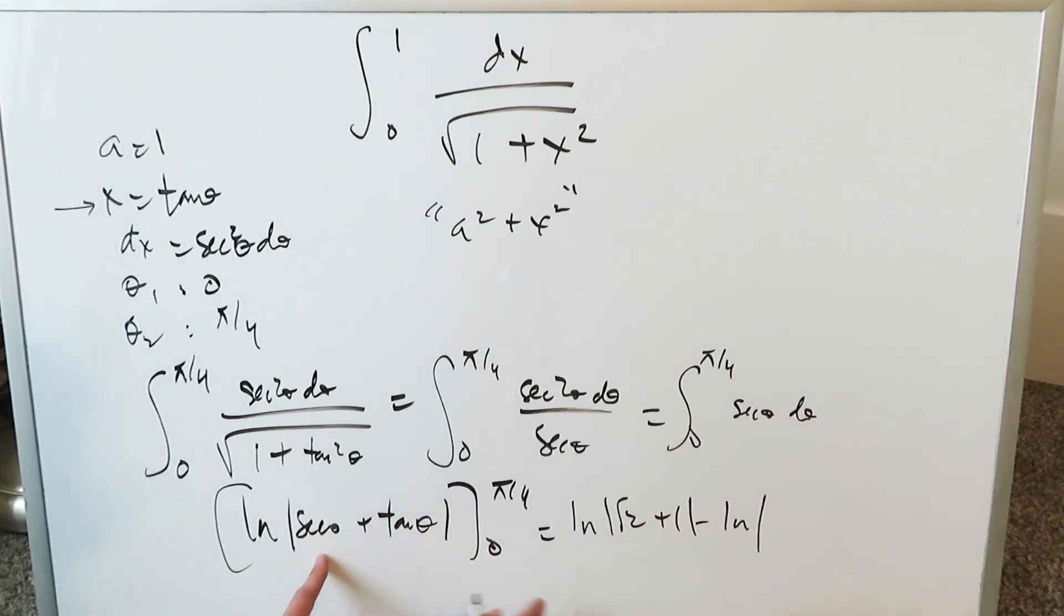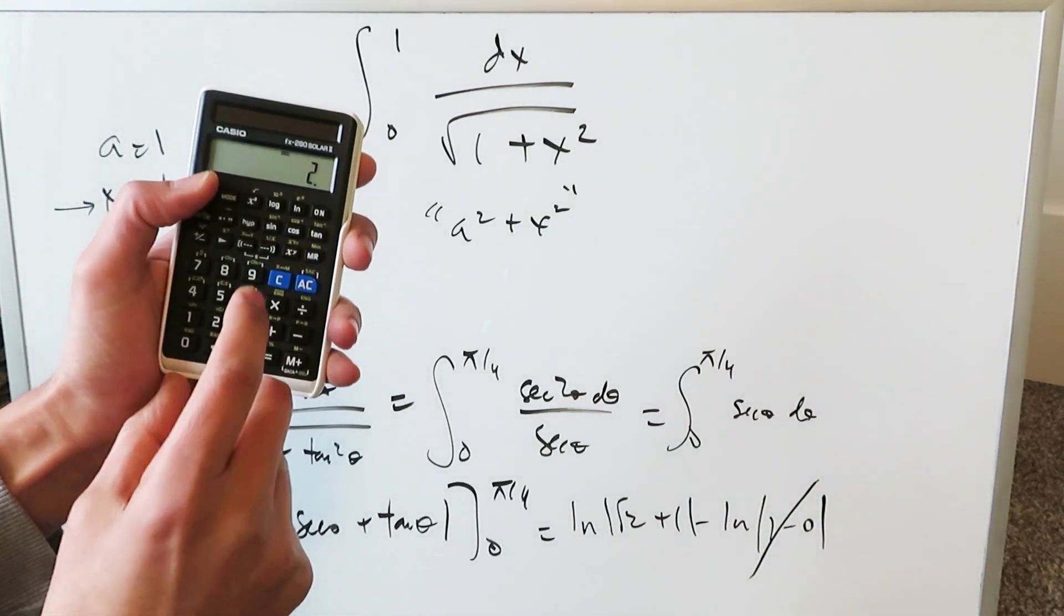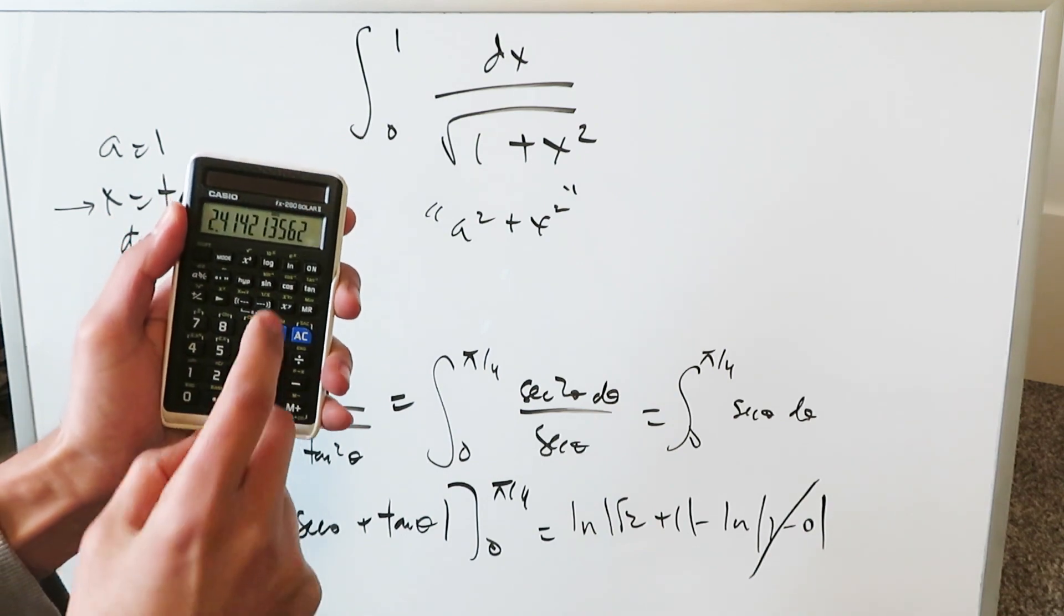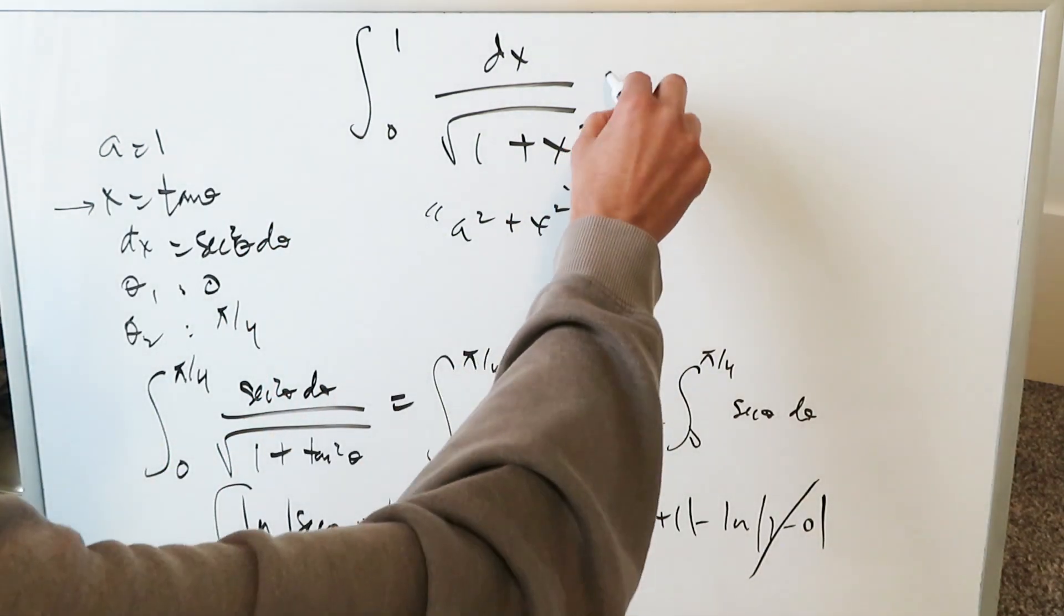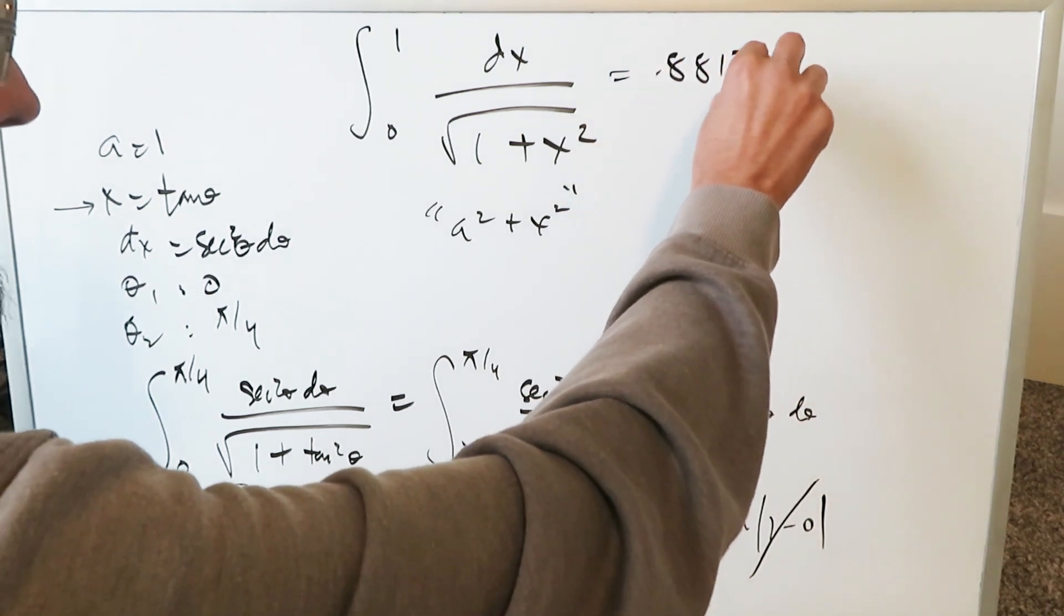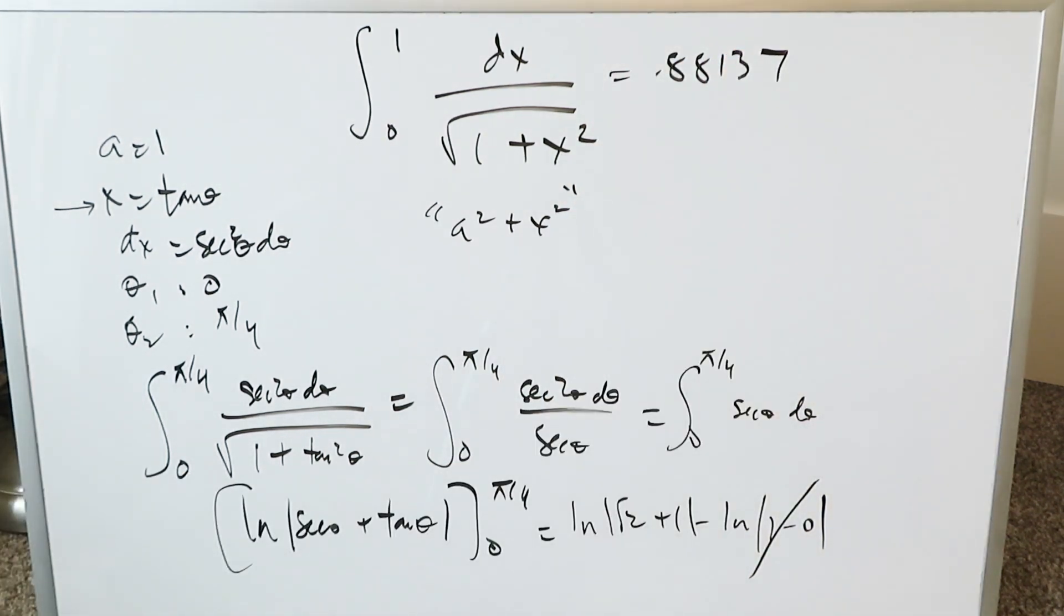Minus natural log secant of 0 is 1. Tan of 0 is 0. That part here will zero out. You'll have natural log root 2 plus 1. Let's get a calculator value. Root 2 plus 1 natural log is 0.88137. That's my end result using the typical trigonometric route which most students lean towards.